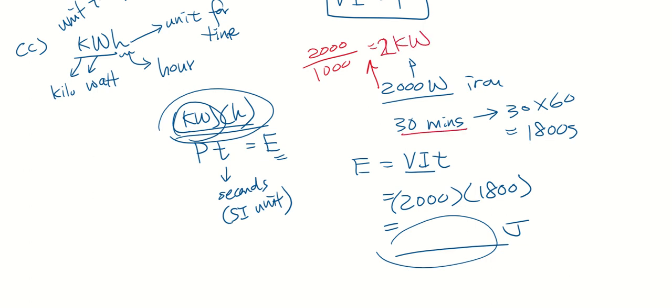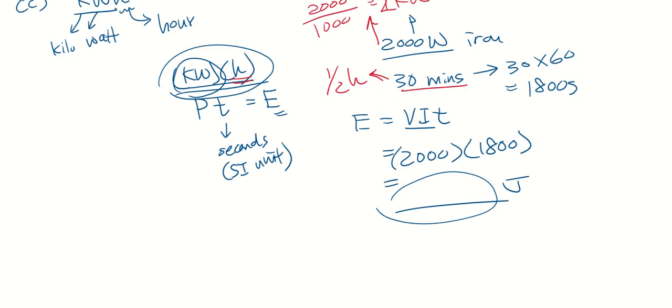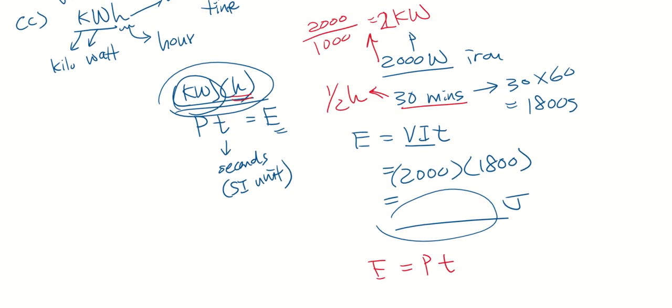This is 2000 divided by 1000, I will get 2kW. And this is 30 minutes, I have to convert it to hours because remember we are dealing with kWh. So this is half an hour. Let us do our calculation again. E equals to power times time. The power in this case now is 2 kilowatt, so I just leave it as 2 because I'm supposed to do my calculation in kWh. My time is supposed to be in hours, so it is half. So this will end up as 1kWh.